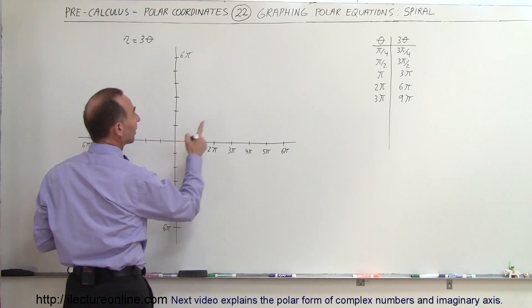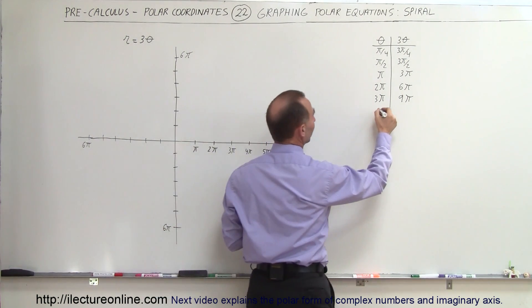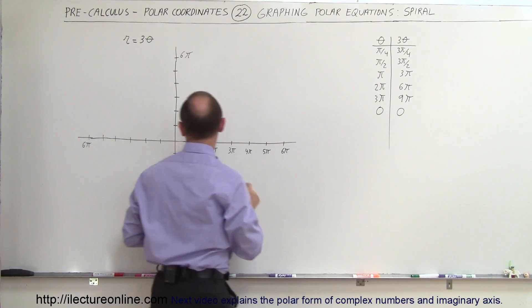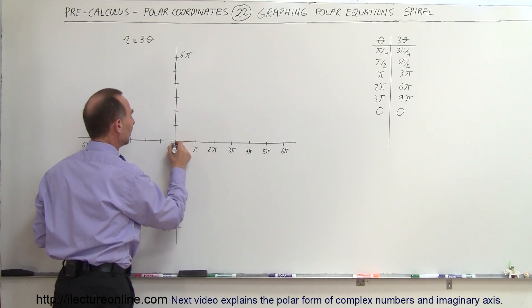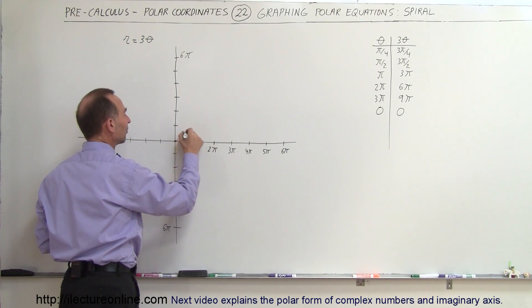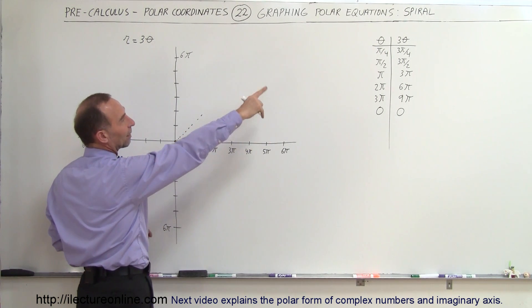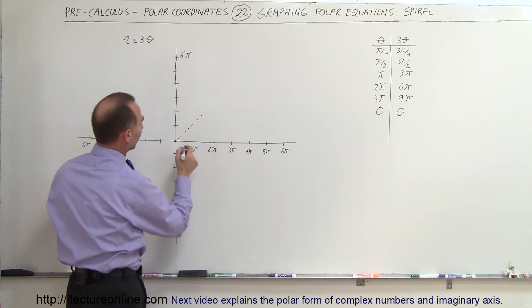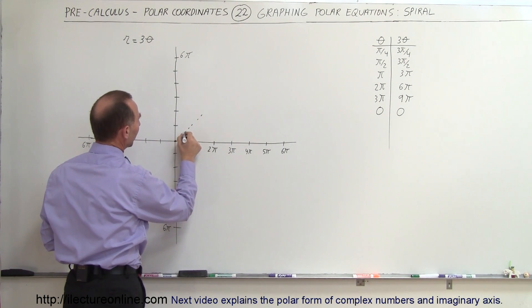So at theta equals 0, which we didn't include, might as well. So if theta equals 0, 3 theta equals 0, and of course that's equal to r. So at 0 we're at the origin right here, but when we make an angle of 45 degrees, notice then at 45 degrees or π over 4, the length of r is 3π over 4, so then we're about right over there.